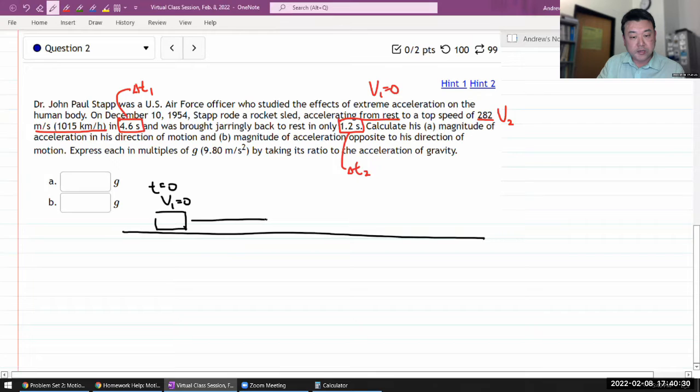And it begins to accelerate and reaches some speed that I'm gonna call v2 at this would be at time equals delta t1. And I guess there might be some intervening time, but for the sake of simplicity let's say there isn't.